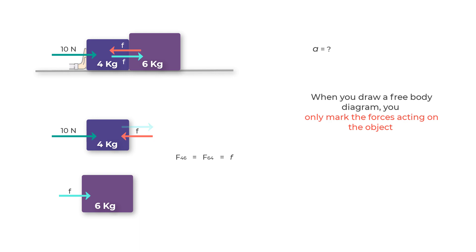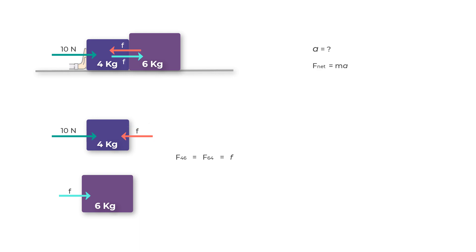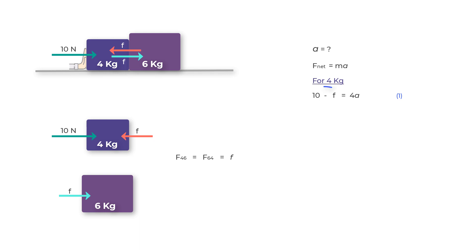Now let us write F_net = ma for each mass. For the 4 kilogram mass: 10 N (positive, rightward) minus F (opposing, leftward) equals 4 times acceleration A. For the 6 kilogram mass: F equals 6 times acceleration A. Notice we use the same acceleration A for both masses — this makes sense because if the 6 kg mass had a different acceleration, the two boxes would either separate or crash into each other.